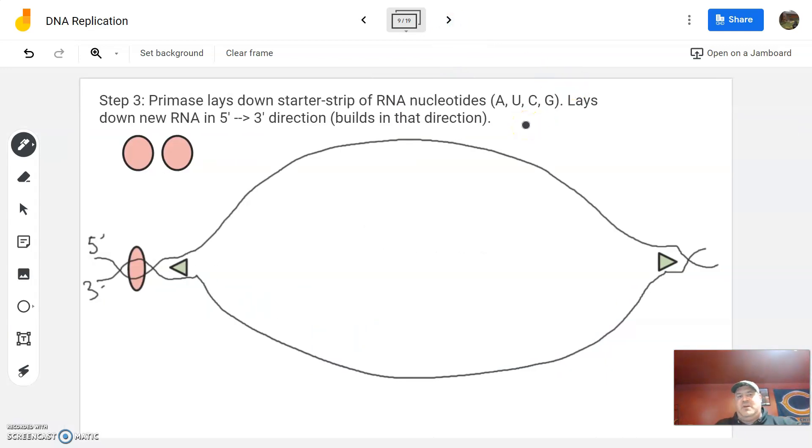So topoisomerase's job is to uncoil the tension on DNA as it's unwinding and unzipping. I haven't put another topoisomerase over here, but we can imply that one is always working over here. So that's step two. I'll let you get your notes and get filled in on that. Alright, so we have our helicase here, we've got our topoisomerase here. I'm going to focus on this side. There's going to be another topoisomerase here, I haven't drawn it in, but you can go ahead and draw that one in. And step three is an enzyme called primase.